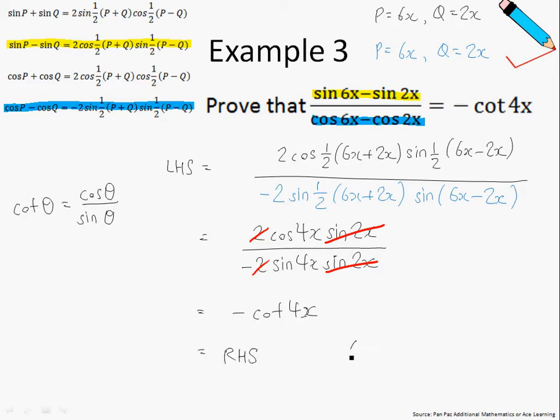And this is just equals to my right-hand side. So RHS stands for right-hand side, and I'll write 'proved'. I hope this was simple for you guys. That's all for example number 3.